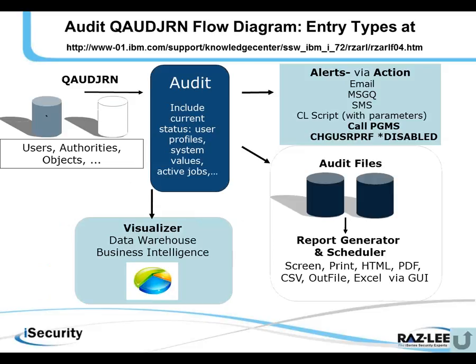QWater Journal flow diagram: as you can see here on the left, the QWater Journal includes lots of information about users, authorities, and objects. iSecurity provides its own status entry types, which reference user profiles, system values, active jobs, objects, groups, etc. in the system.